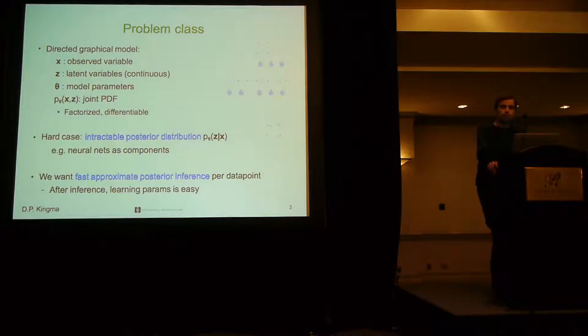The general problem we will focus on in this talk is efficient inference and learning in directed graphical models. We will denote with X the observed variables in the Bayes net, and with Z the continuous latent variables. We will have an X and Z pair data points, and with theta we will denote the parameters of the model.